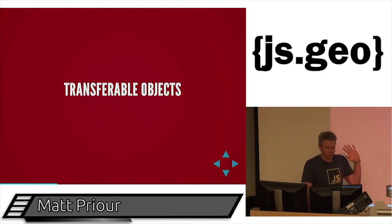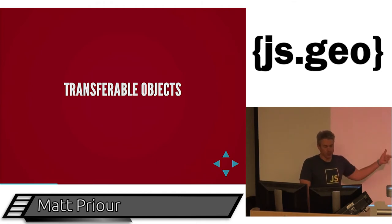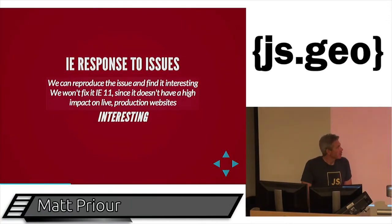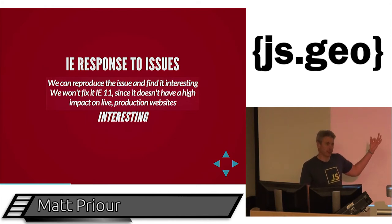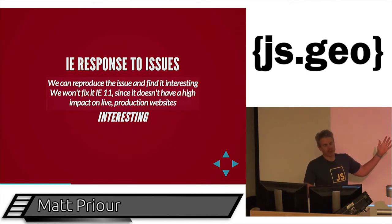Transferable objects — the optional second argument of postMessage. You should be able to put in blobs or typed arrays and have them work. IE 10 and 11 claim they have the second argument, but that second argument is not actually transferable objects — it's message ports. There's an open issue on this, and IE's response was basically: we can reproduce the issue and find it interesting, but we were unable to fix it in IE 11 because it doesn't have a high impact on live production websites. Since people aren't using it, IE doesn't care.